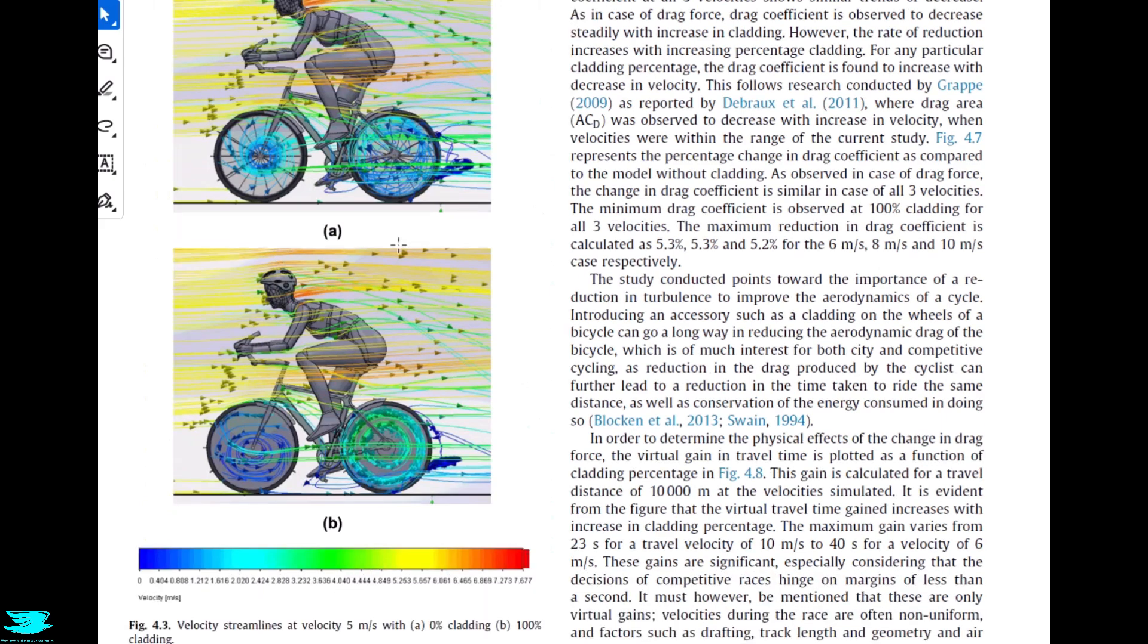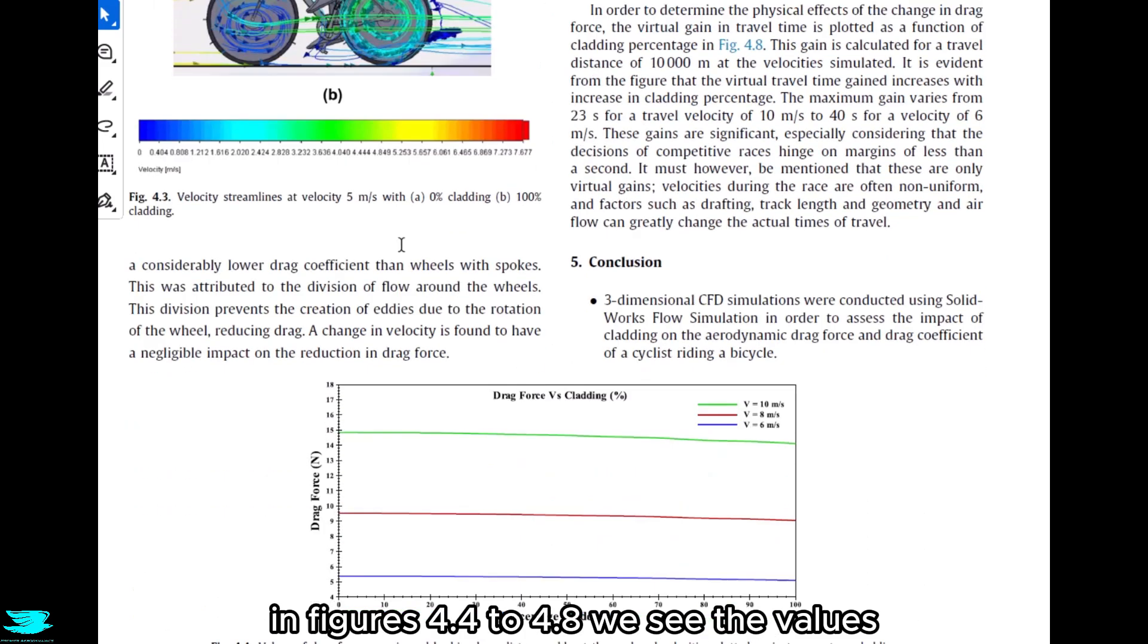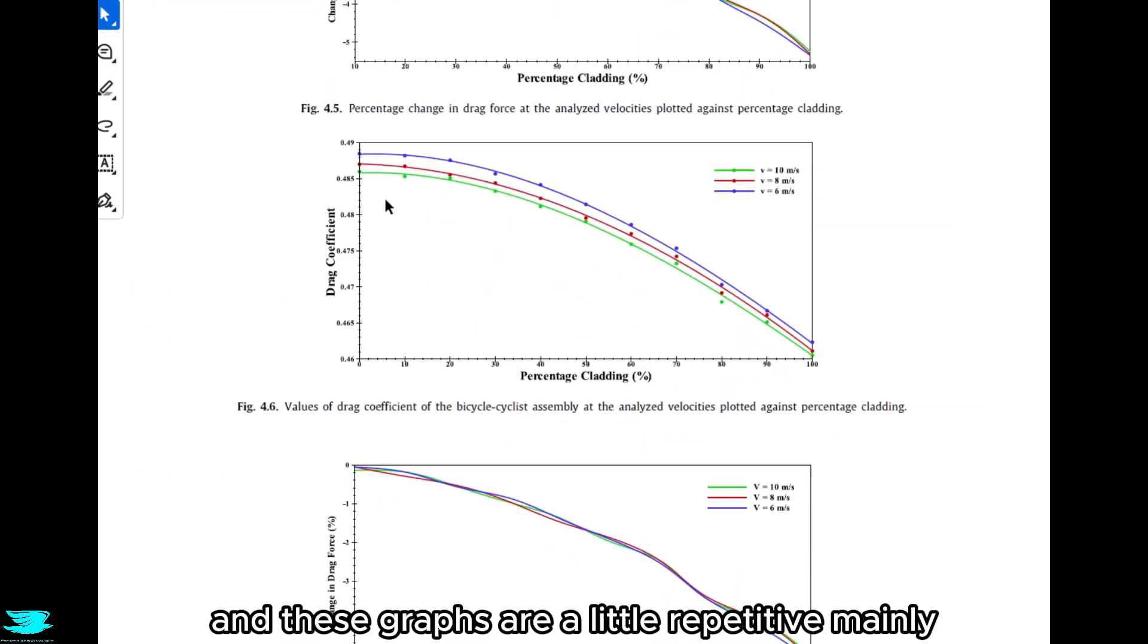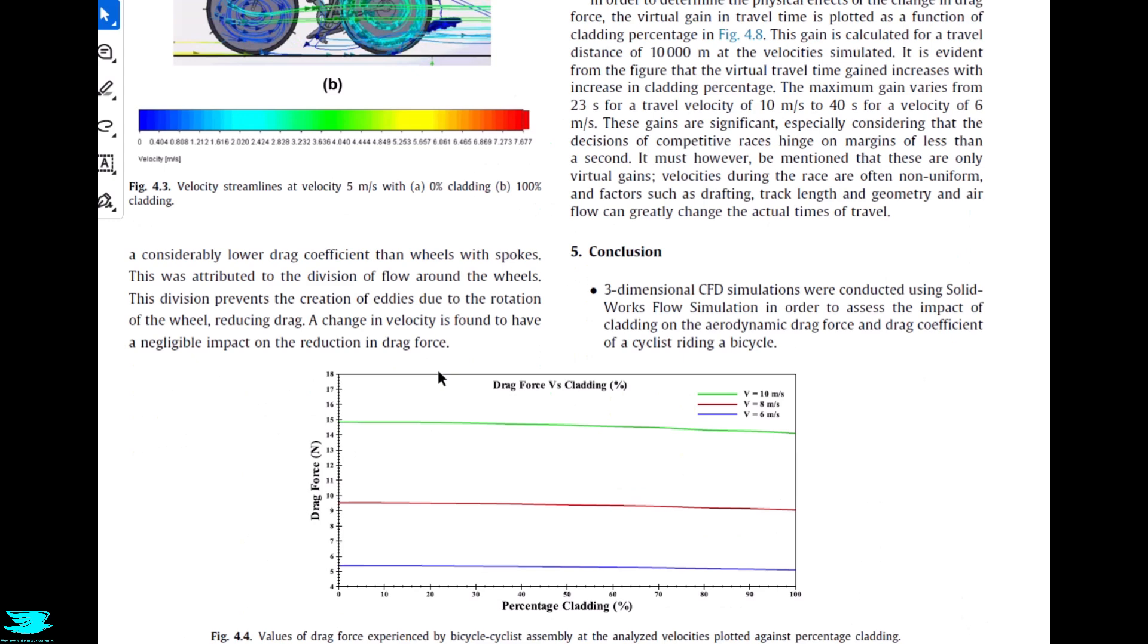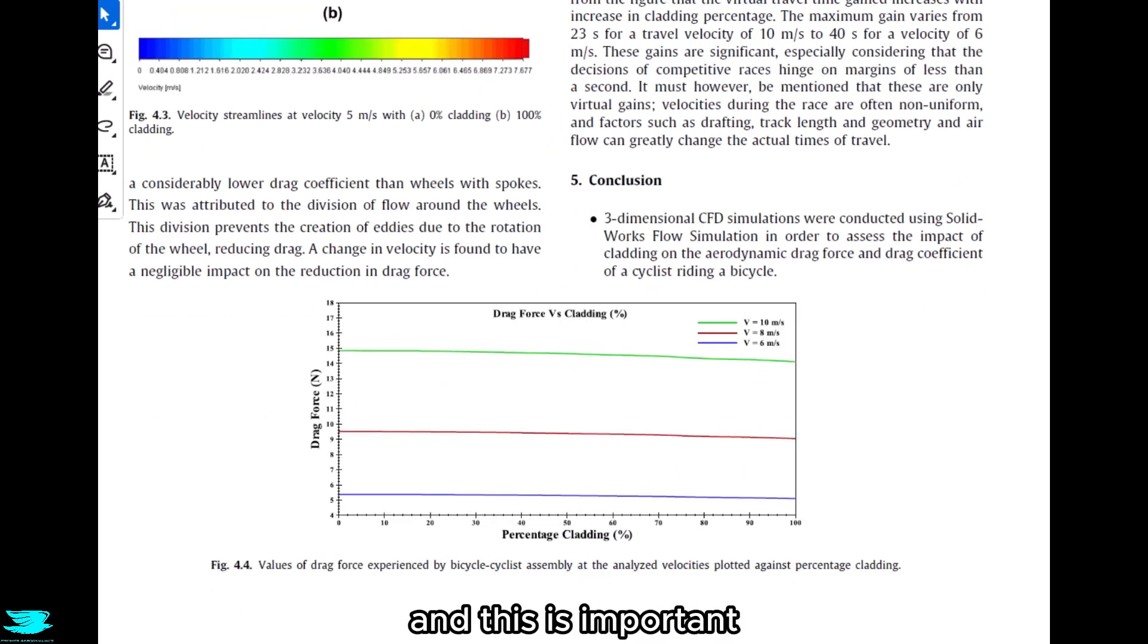But in terms of the actual drag savings, in figures 4.4 to 4.8, we see the values. These graphs are a little repetitive, mainly 4.7, but we'll get to that later. Let's first look at 4.4. This shows the overall drag force, and this is important because this is literally the drag force the cyclist will feel when riding along. This is how much is resisting the motion. The x-axis is the percentage of cladding, so 0% means the rim is completely open, 100% is the rim is completely closed. The y-axis is the drag force in newtons. Then there are three lines on the plot: green, red, and blue. The green is for 10 meters per second, the red is for 8 meters per second, and the blue is for 6 meters per second.